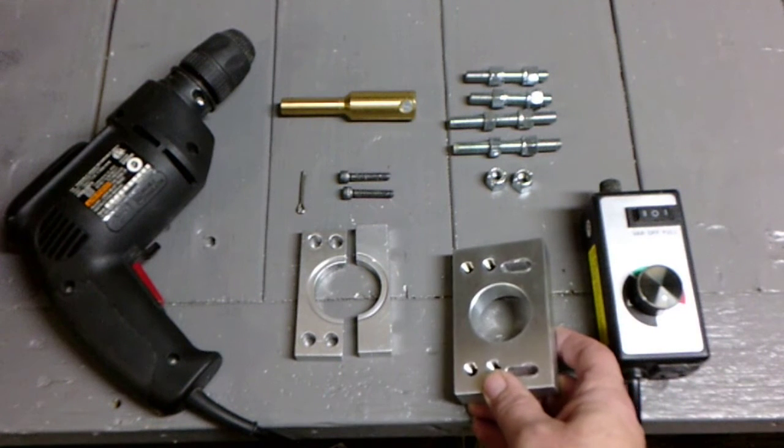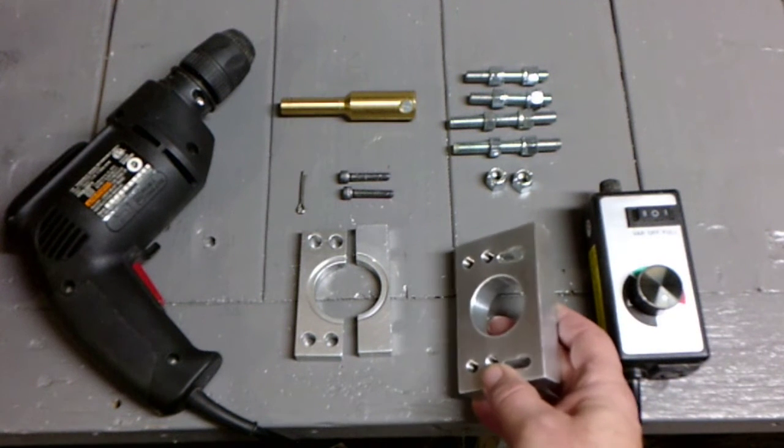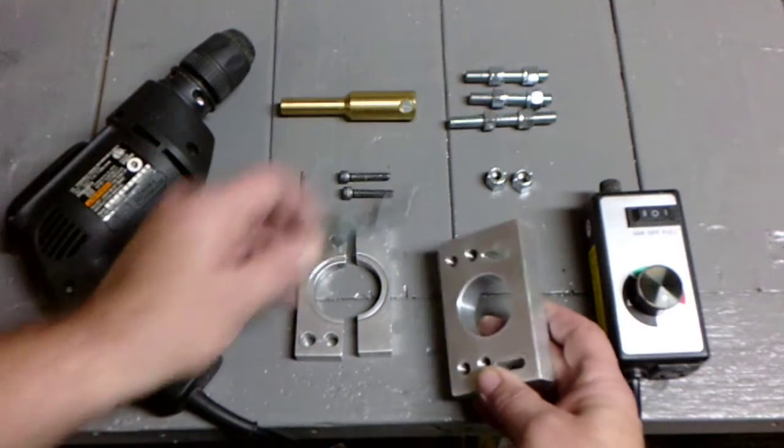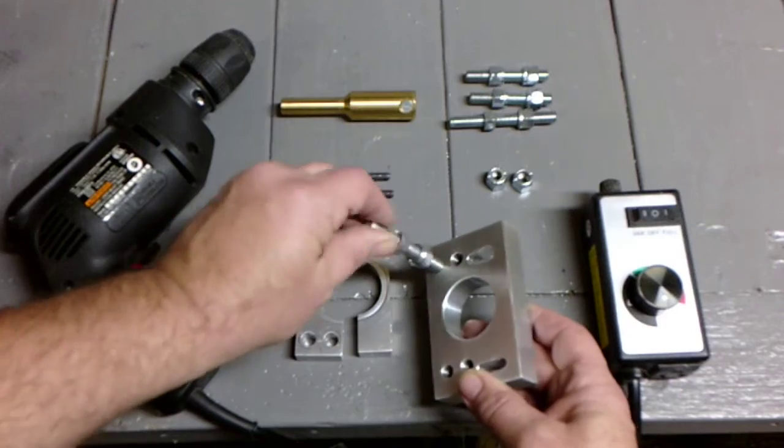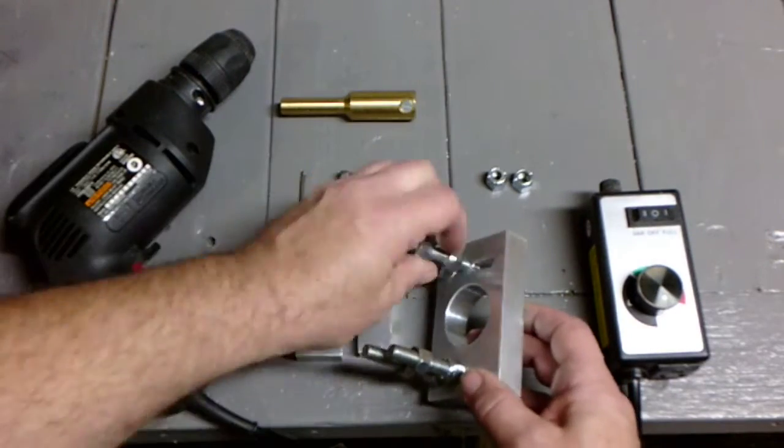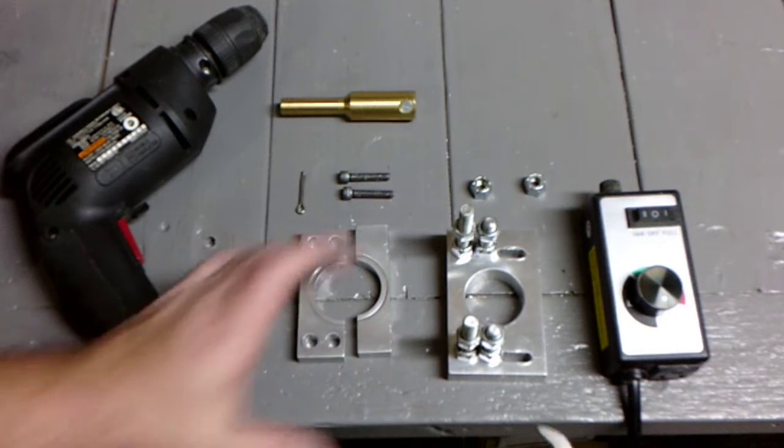This bracket mounts to the left side of the bed. The standoffs screw into the threaded holes in the bracket. Then tighten locking nuts down.